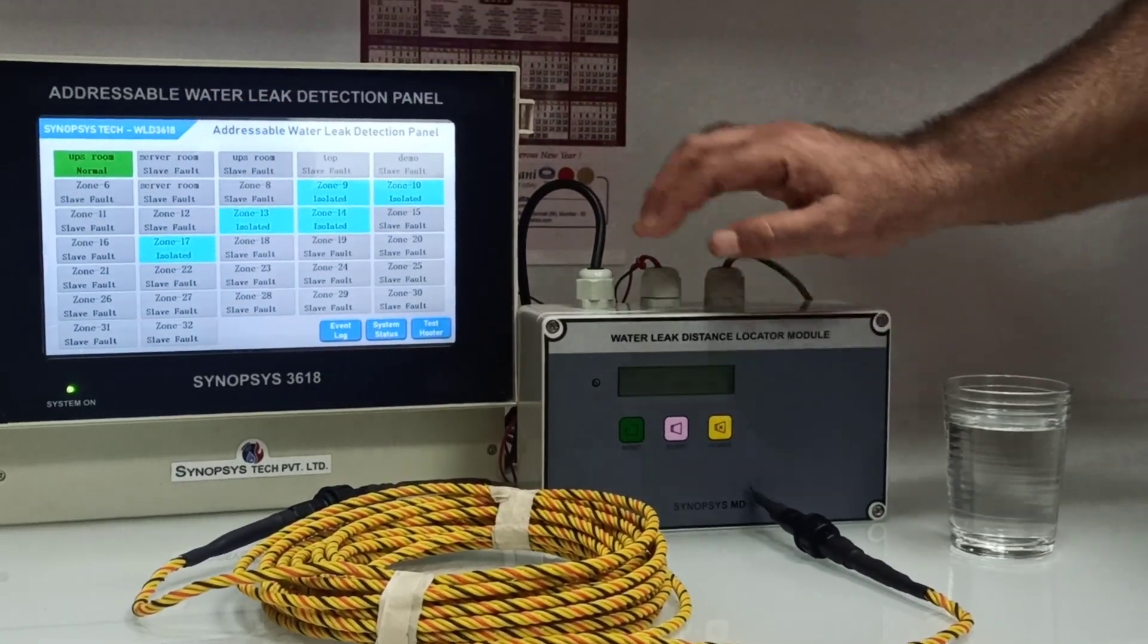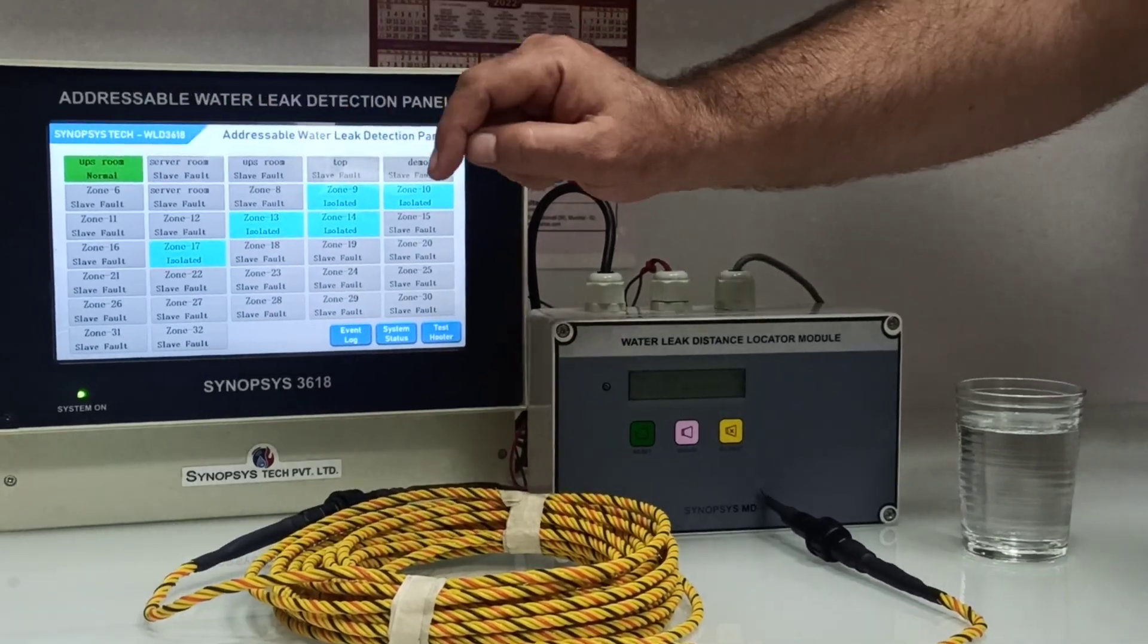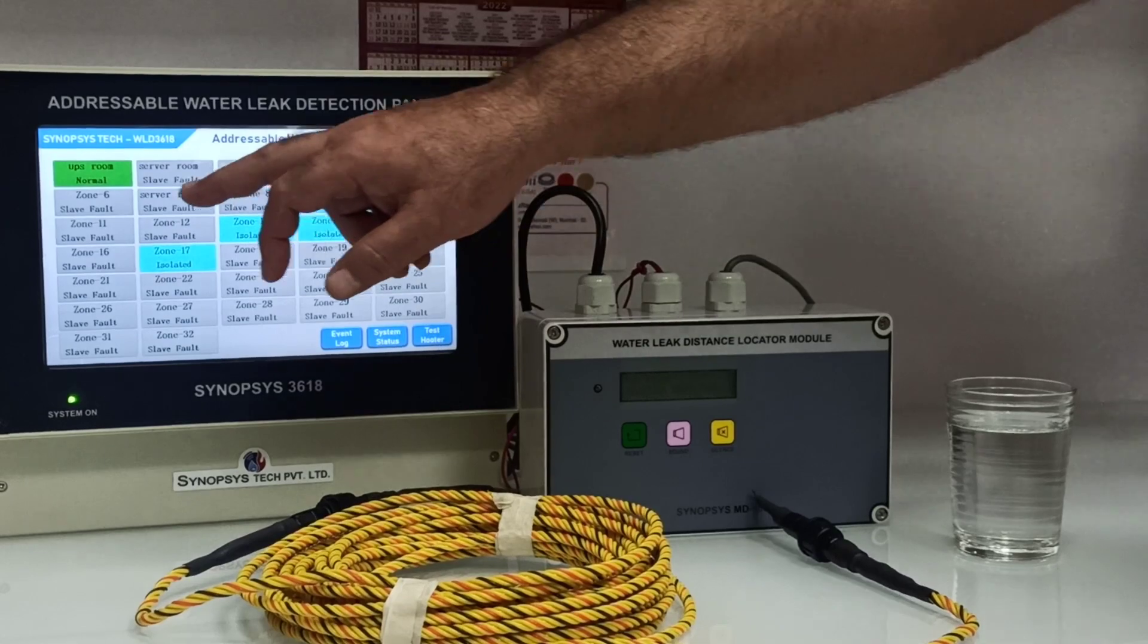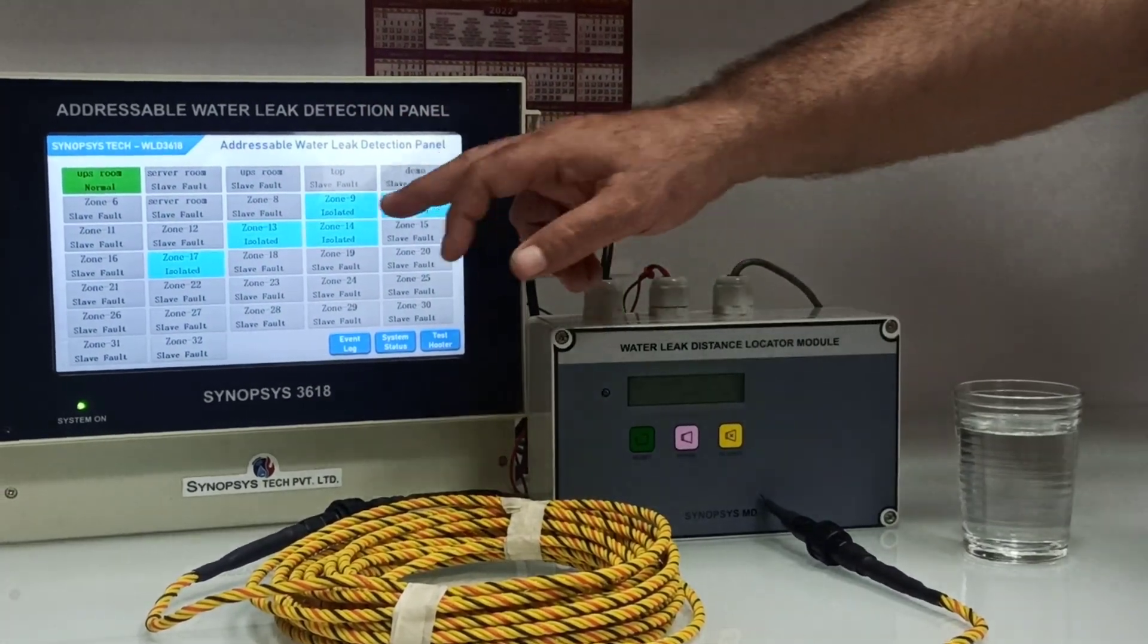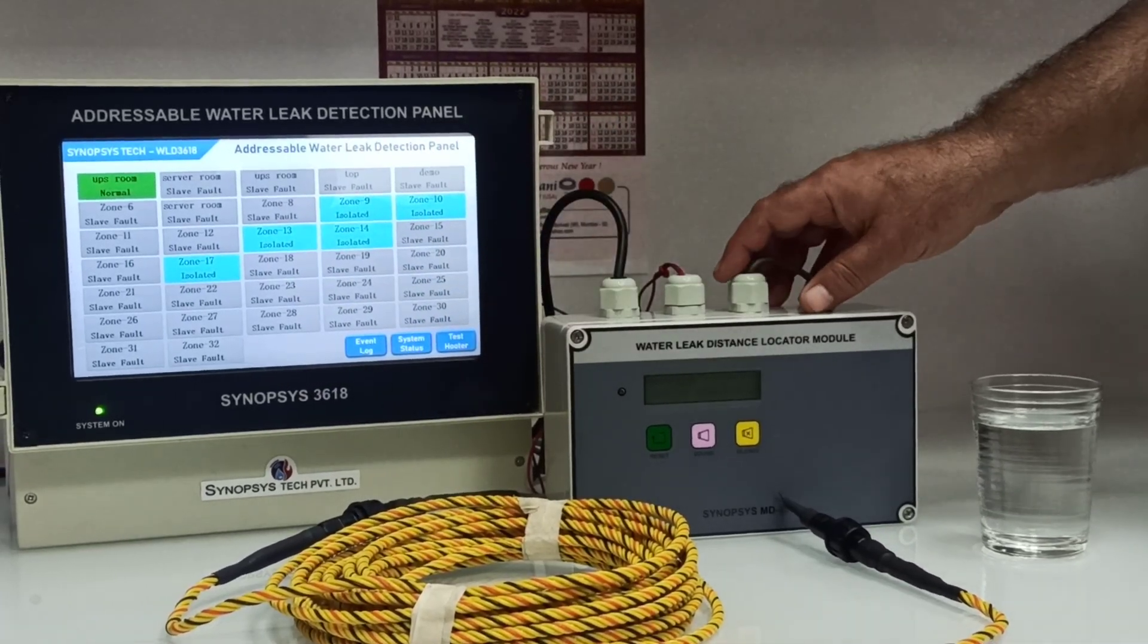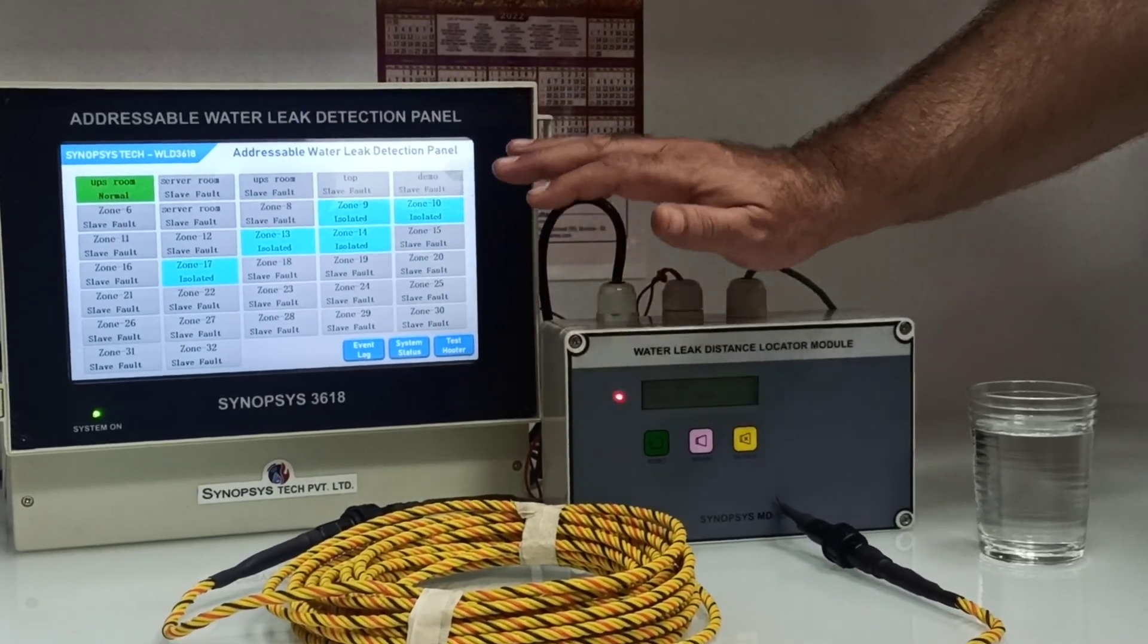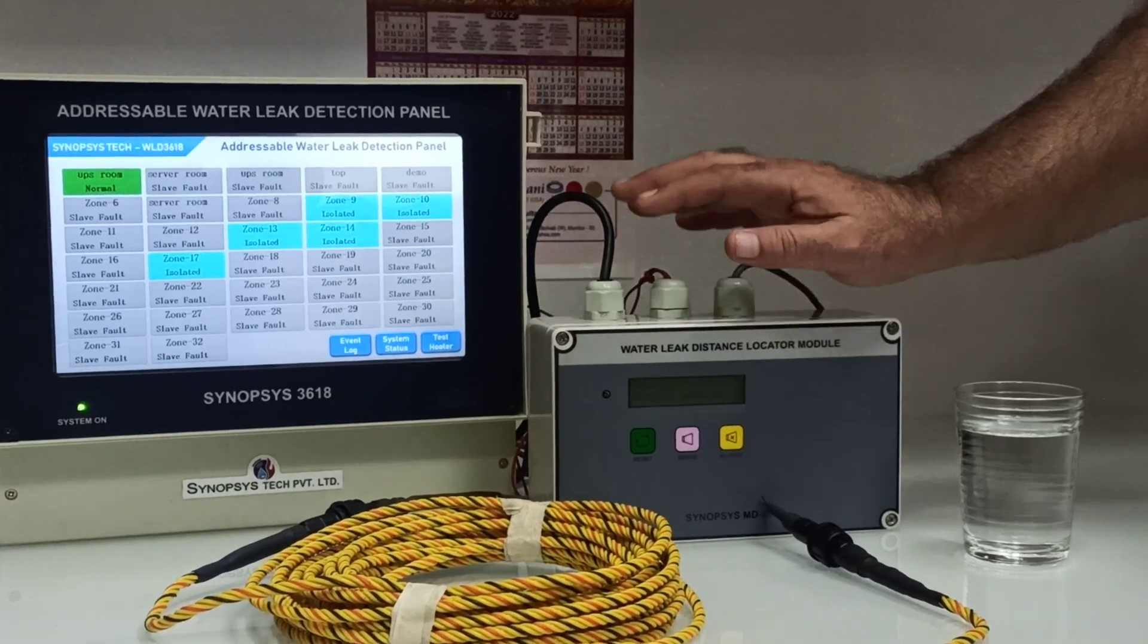Green stands for normal, so this SIM module is normal. Then all these zones which are grey, they are slave fault since they are not connected. We have isolated this blue. So blue shows isolated zones. At any point of time you come to know the status of all the SIM modules at one go.